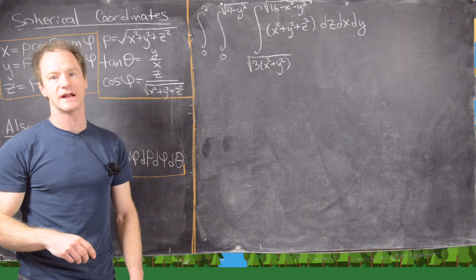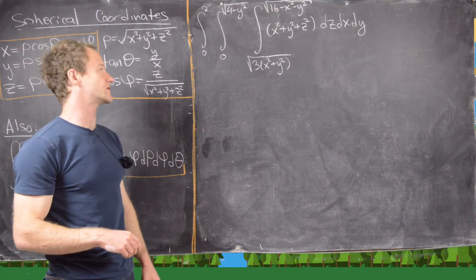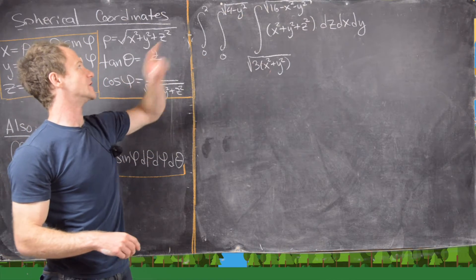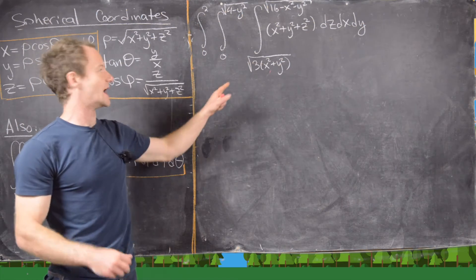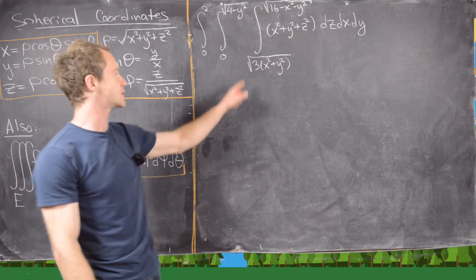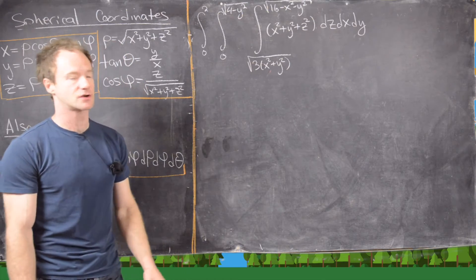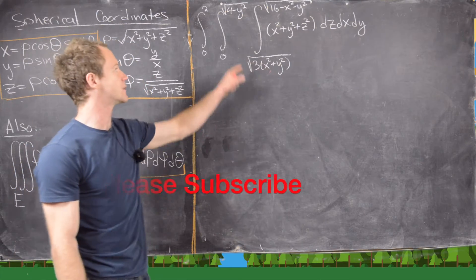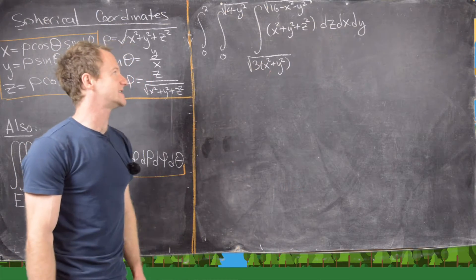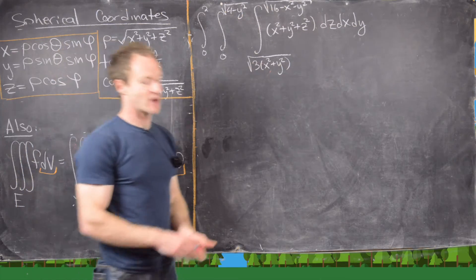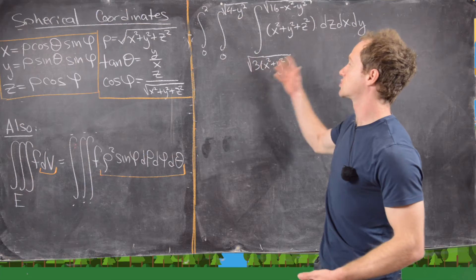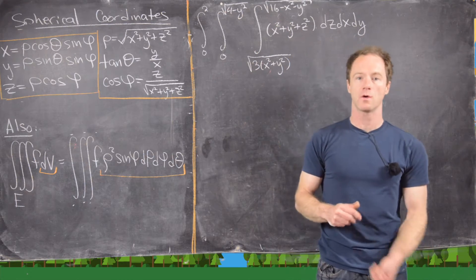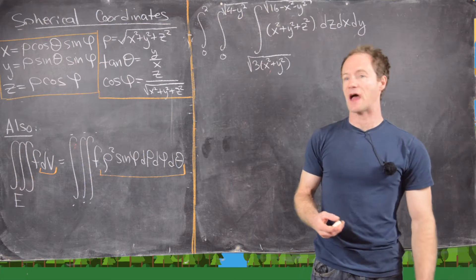In this video we're going to look at this fairly complicated triple integral — it's an iterated integral to start off with. The outermost integral is with respect to y and goes from 0 to 2. The middle integral is with respect to x and goes from 0 to the square root of 4 minus y squared. The innermost integral is with respect to z. The strategy is to draw a picture of what this region represents, convert it to spherical coordinates, and then evaluate the integral that way.